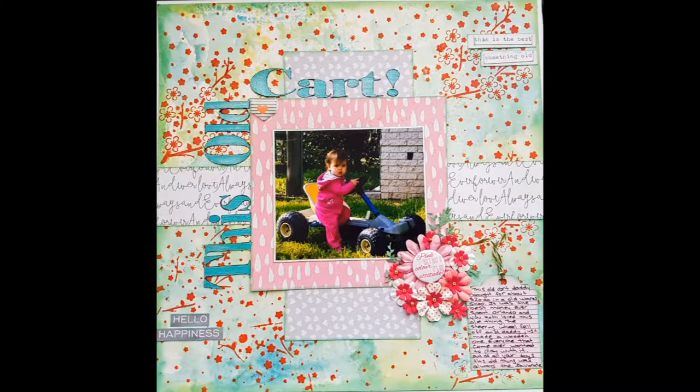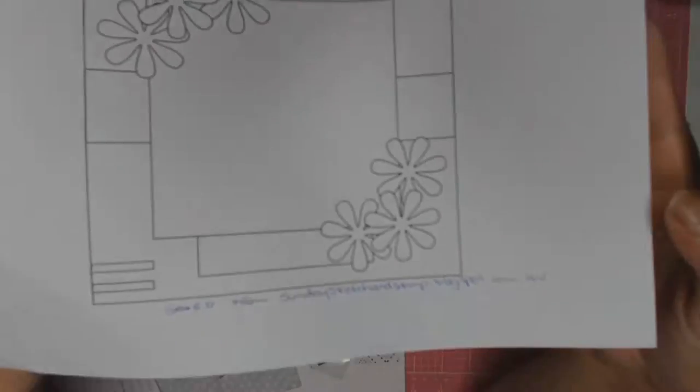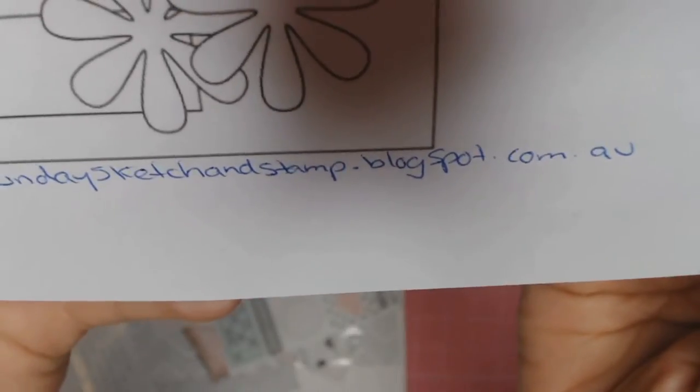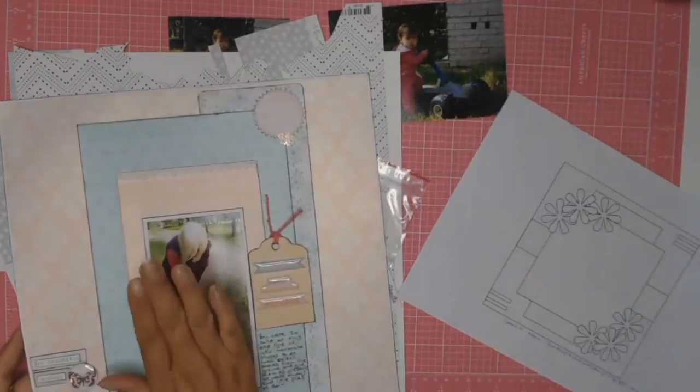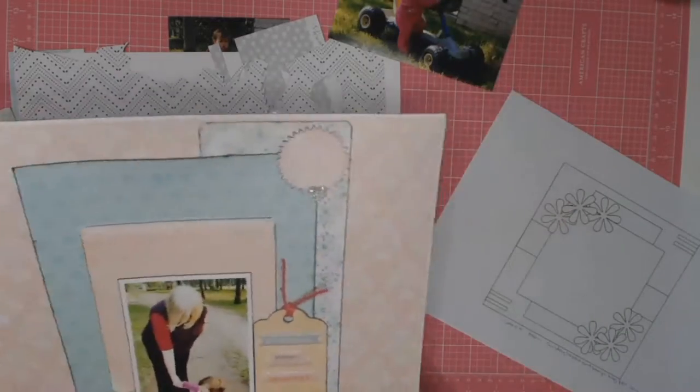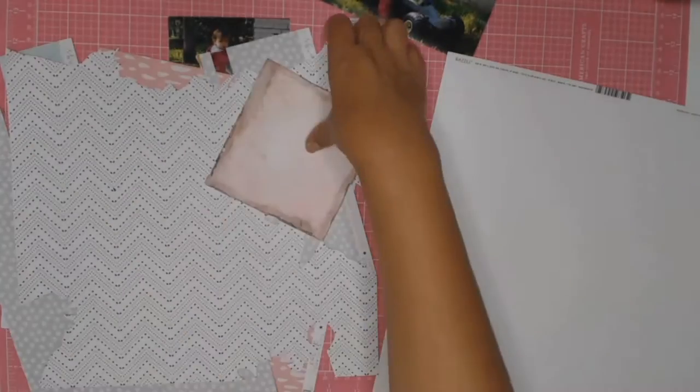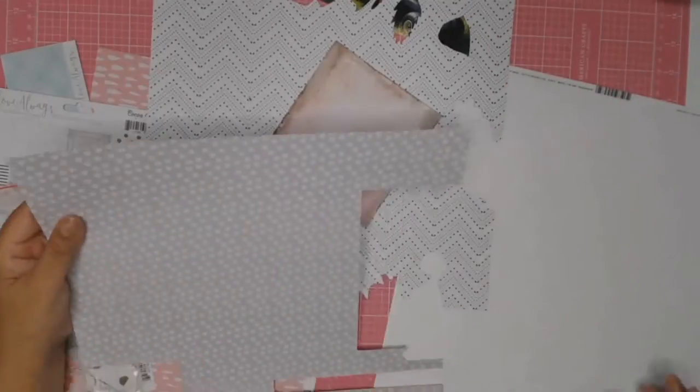Welcome back everyone, this is Sylvia from Aussie Scrapper and today's layout is from this sketch that I found on Pinterest. It's from Sunday's Sketch and Stamp blog. I will link it in the description below and I am using some of the Coco Vanilla Love Always collection.